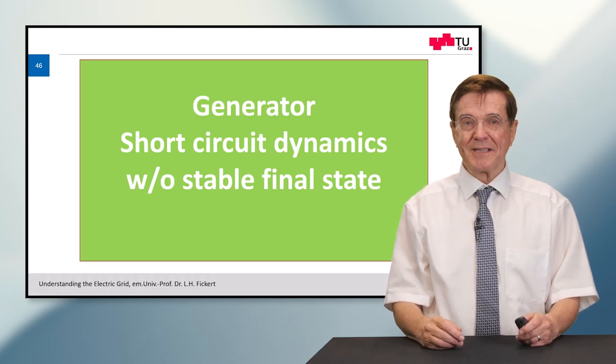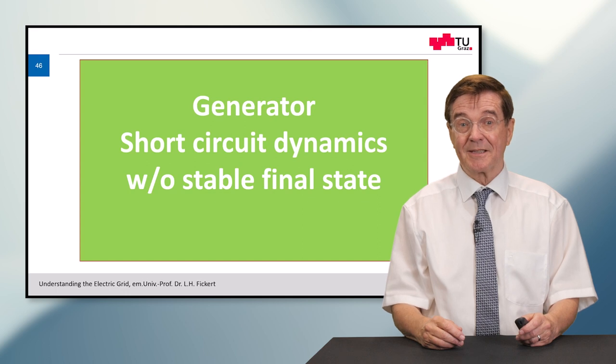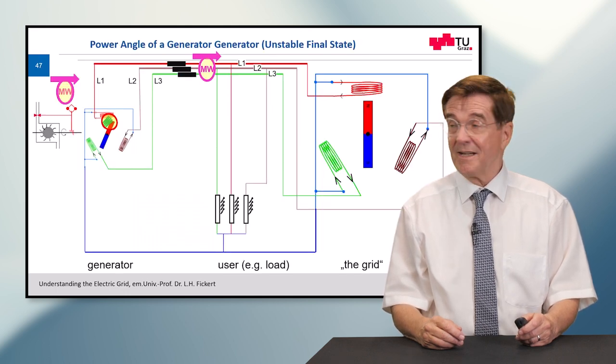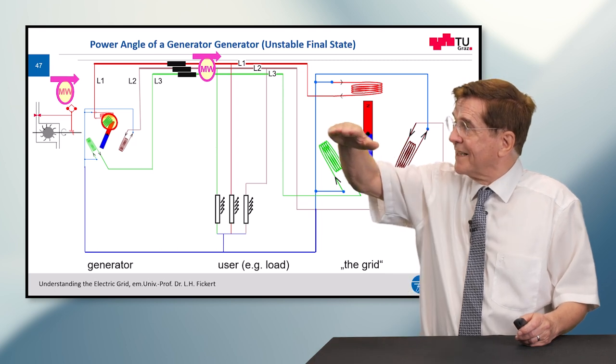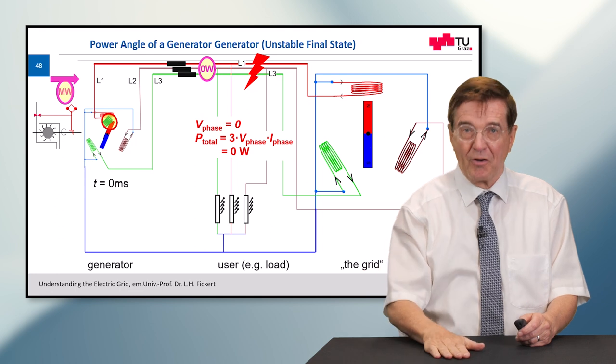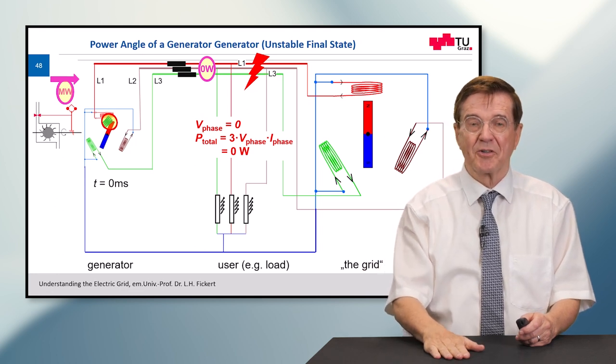Now the next case we want to look into is a short circuit dynamics without stable final state. So this leads to a system breakdown. How is it going? So first again we start with the smooth operation of the system until a fault happens. The same fault as before. What does it mean? No exchange of power between the generator and the big grid.